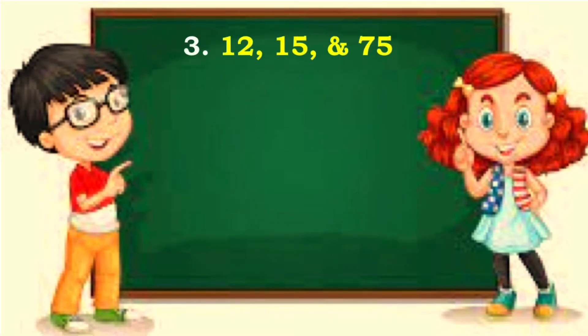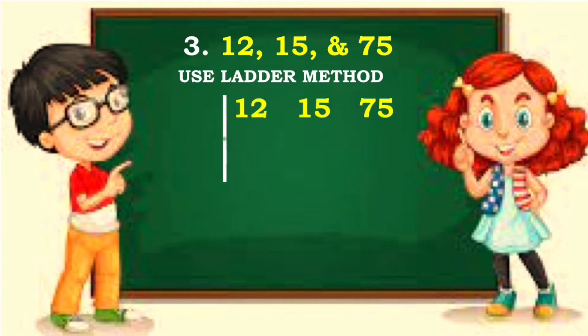Now in this example, 12, 15 and 75, use ladder method. When you add the digits of each number, the result is divisible by 3. So 12 divided by 3 is 4, 15 divided by 3 is 5, 75 divided by 3 is 25.